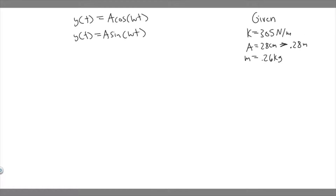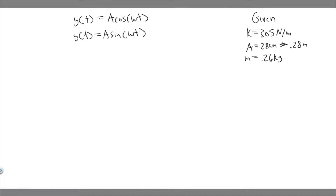We're going to pick one of these equations, and the way you pick it is based on what they tell you. They tell us the mass passes through the equilibrium point y equals zero with positive velocity at t equals zero. Think about cosine and sine waves — sine is the one that passes through the origin. It's going to go like this. Cosine doesn't pass through the origin; it starts at a maximum. So we're choosing the sine wave and ignoring the cosine.